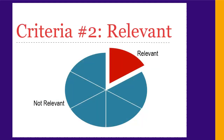The second main criteria for evaluating your sources is relevance. You need to make sure your sources are relevant to your topic. Often you find a lot of information on your topic, and it's easy to assume most of it is relevant. In reality, though, only a few of the sources out there on your topic are actually relevant to your paper.